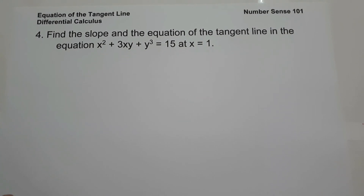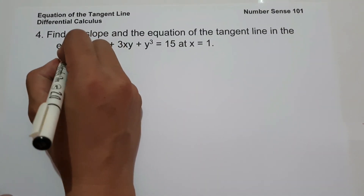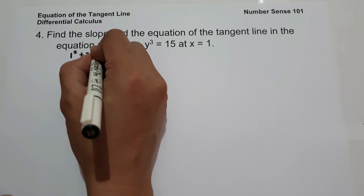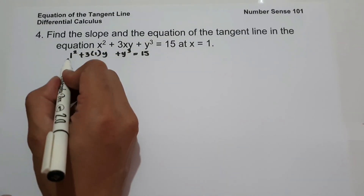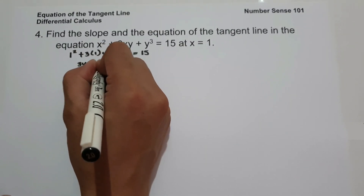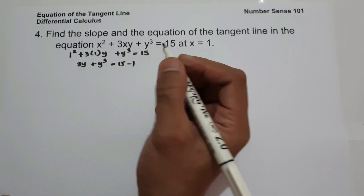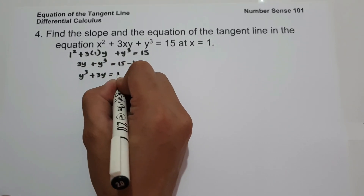Number 4: find the slope and equation of the tangent line to x squared plus 3xy plus y cubed equals 15 at x equals 1. To find y, substitute x = 1: 1 squared plus 3 times 1 times y plus y cubed equals 15. Since 1 squared is 1, moving it gives 3y plus y cubed equals 14, or y cubed plus 3y equals 14.